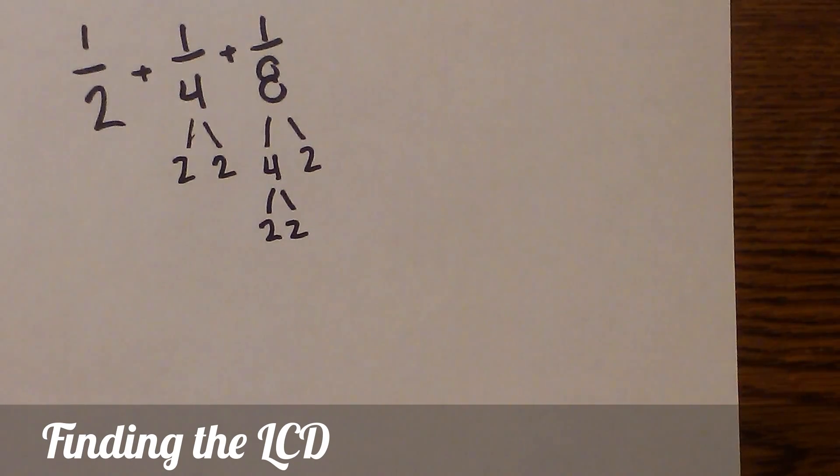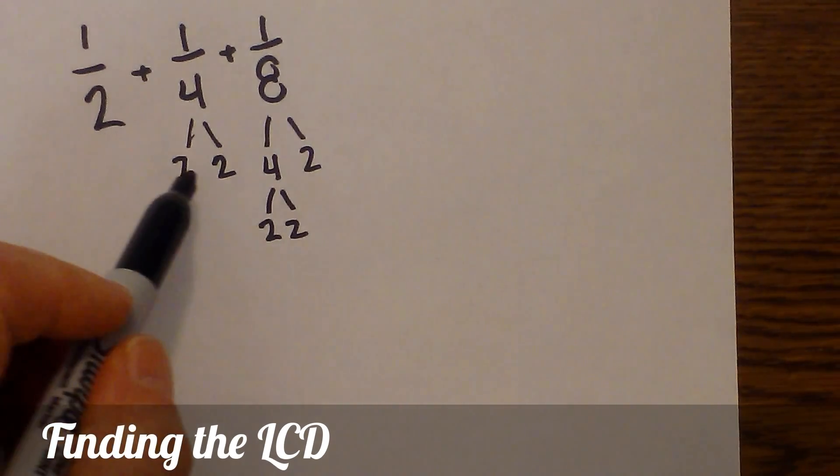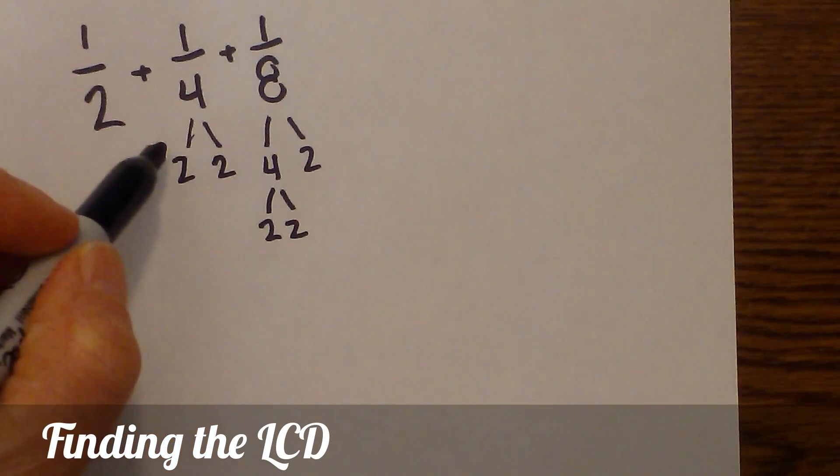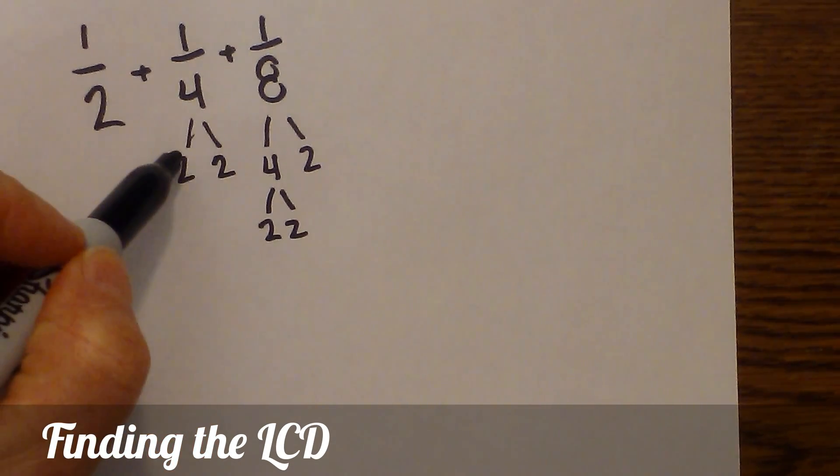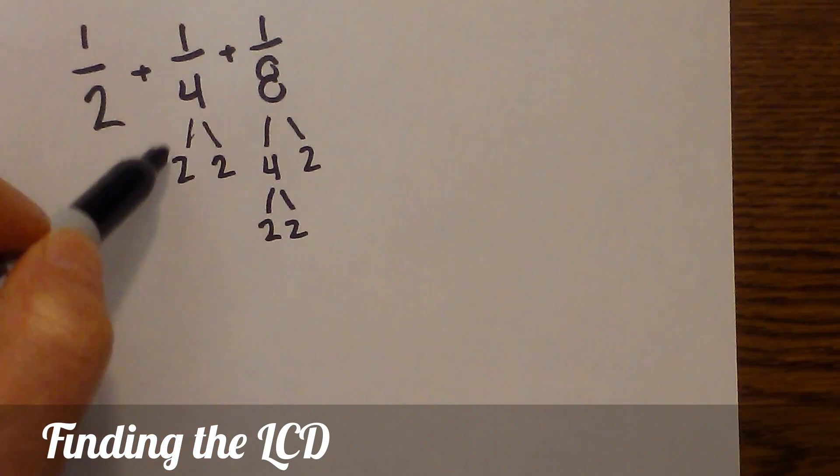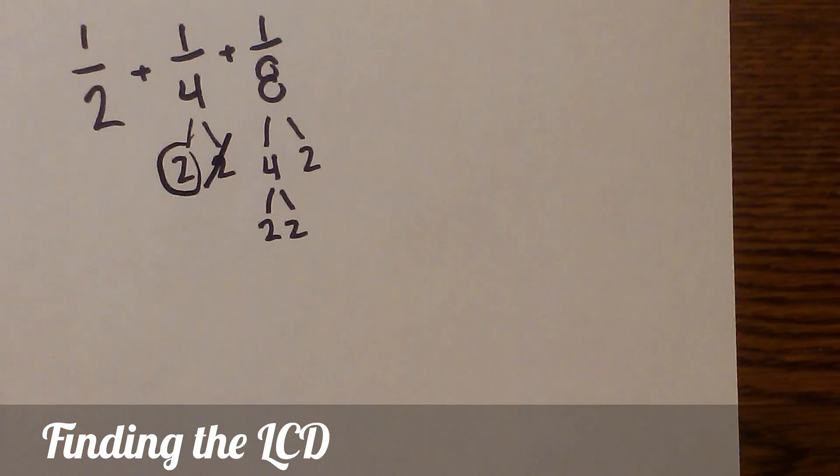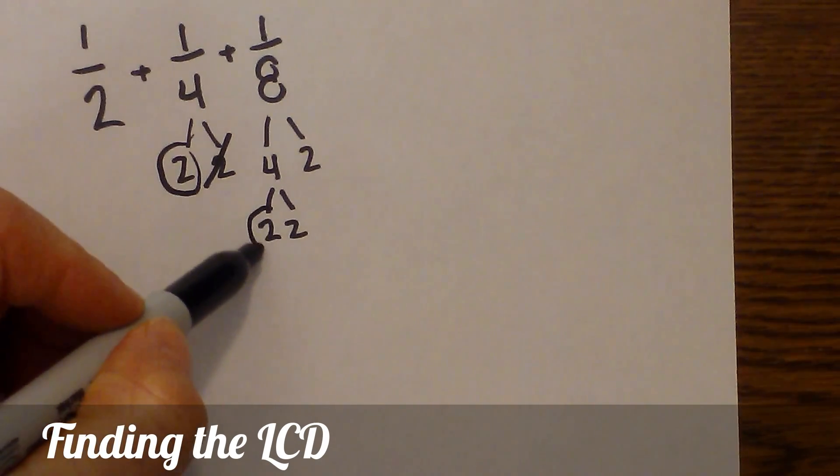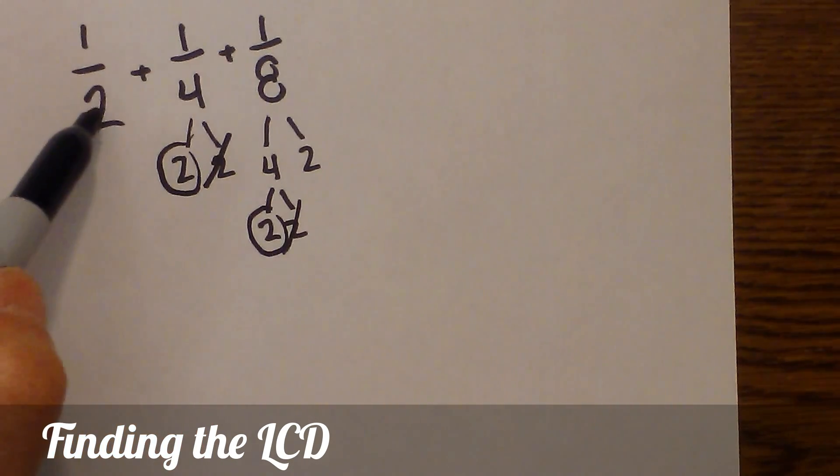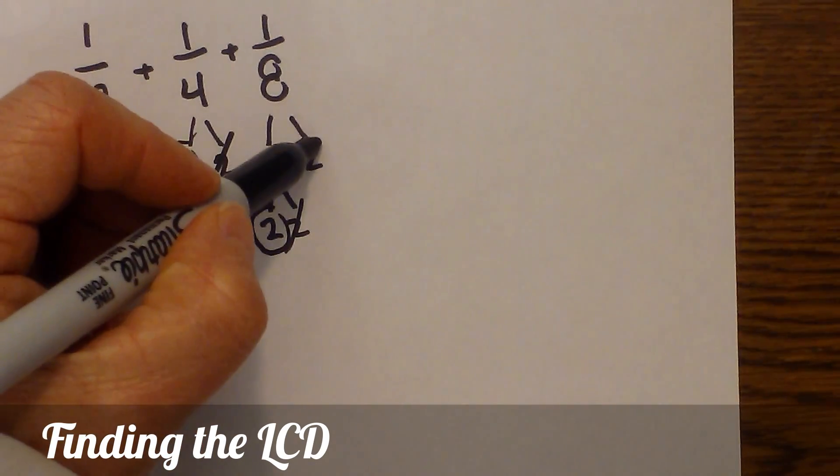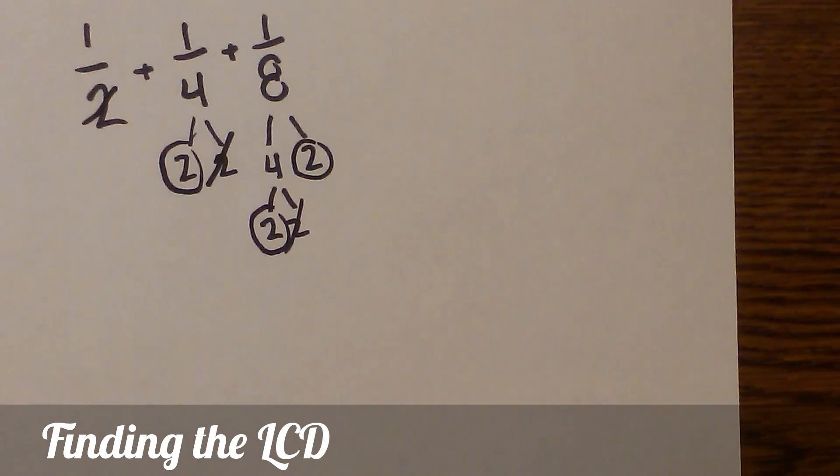Now what we need to do is anytime you have a pair, you work it like this: whenever you have more than one of the same number, you circle one and cross through the other. Circle one, cross through the other. Then I have one pair left, so I will circle one and cross through the other.